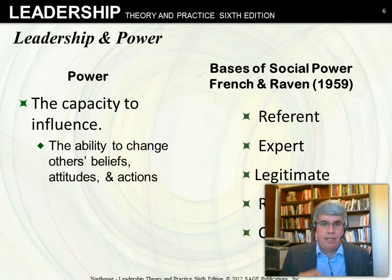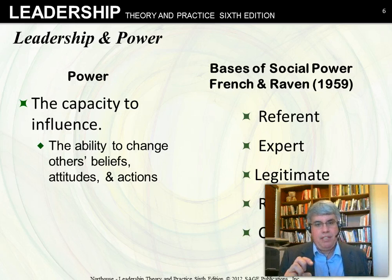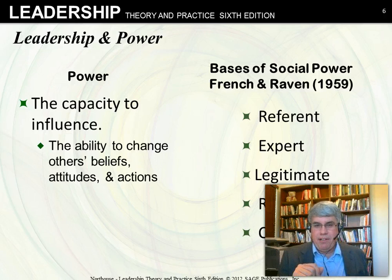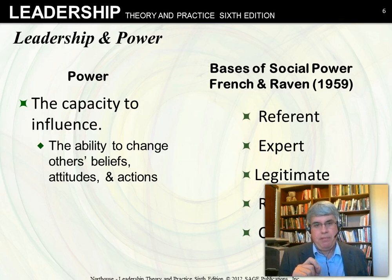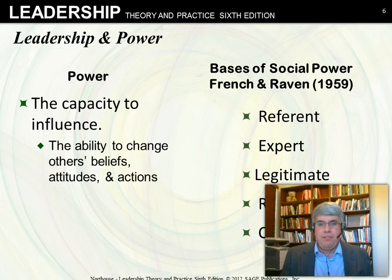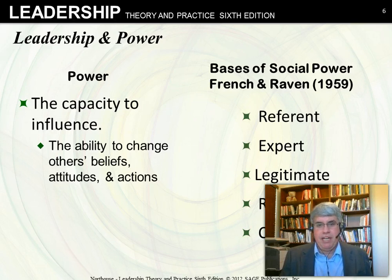A leader must have the capacity to influence — the leader has to have power. Power is quite complex. We've all heard the saying 'power corrupts,' but perhaps only certain types of power corrupt, and perhaps only in certain circumstances. A good framework for understanding power is the Bases of Social Power by French and Raven, a paper written in 1959 that still does a good job of explaining the different types of power people have.